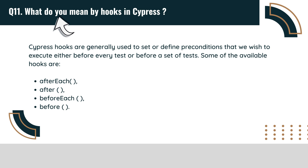What do you mean by hooks in Cypress? Cypress hooks are generally used to set or define preconditions that we wish to execute either before every test or before a set of tests. Some of the available hooks are: after each, after, before each, and before.